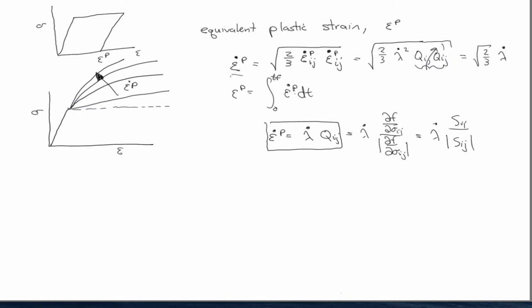So now we're going to use this equivalent plastic strain rate to parameterize it. And of course, you can have other internal state variables or other variables, but one of the most obvious is temperature, and temperature will usually cause softening.